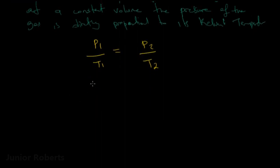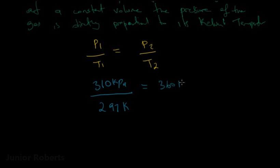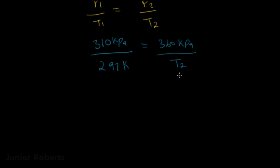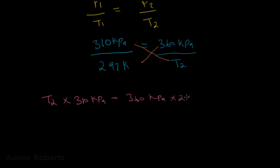Substituting into the pressure law equation: the initial pressure of 310 kilopascals divided by the initial temperature of 297 Kelvin equals the final pressure of 360 kilopascals divided by the unknown temperature T2. Cross-multiplying gives T2 times 310 kilopascals equals 360 kilopascals multiplied by 297 Kelvin.